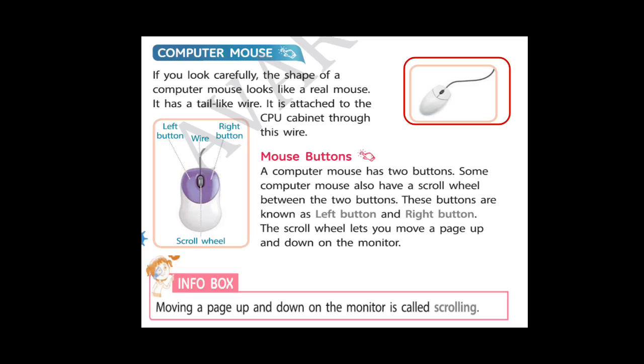If you look carefully at the picture on the right side, the shape of a computer mouse looks like a real mouse. See, it has a tail like a wire. It is attached to the CPU, which is called the brain of the computer, through this wire.